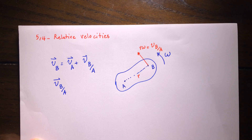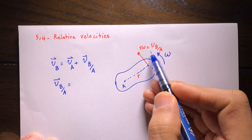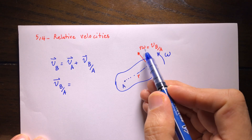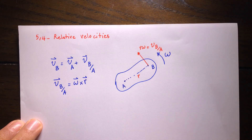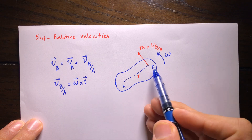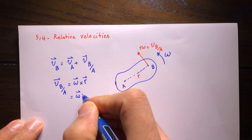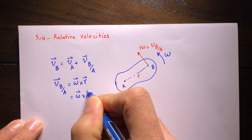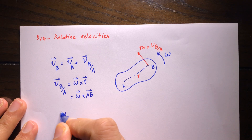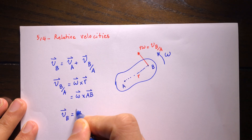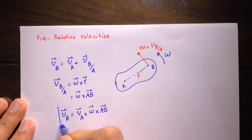The vector form of this relative velocity is ω × r, where ω × r gives both the magnitude r·ω and the direction perpendicular to AB. Instead of r you can write the vector AB. Substituting into our equation, we get the key result: velocity of B equals velocity of A plus ω cross AB. This is a very important equation.